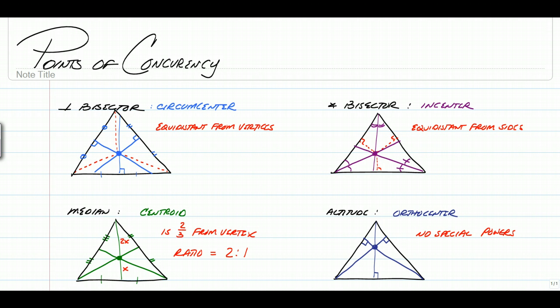One of the things you may remember is a perpendicular bisector. Any point on it will be equidistant from the two endpoints of the segment you just cut in half and was perpendicular to. So if all three of them intersect in a triangle, that point will be equidistant from all three vertices.